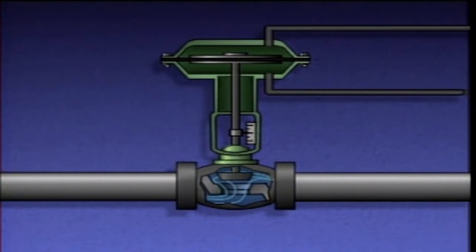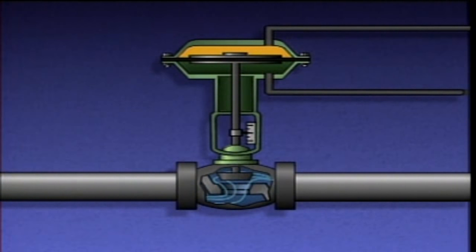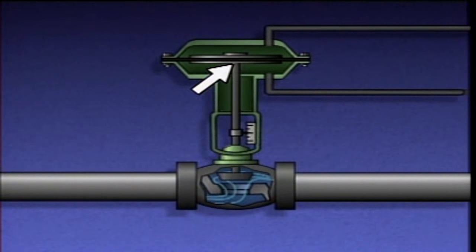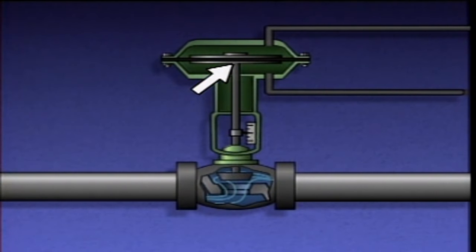This arrangement divides the casing into an upper chamber and a lower chamber. The upper end of the actuator stem is connected to the metal plates and the diaphragm, and the lower end is connected to the valve stem.